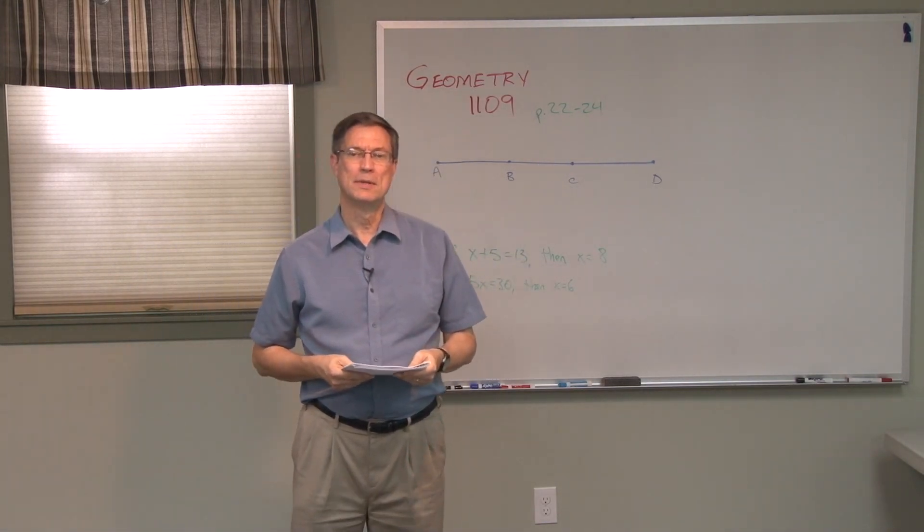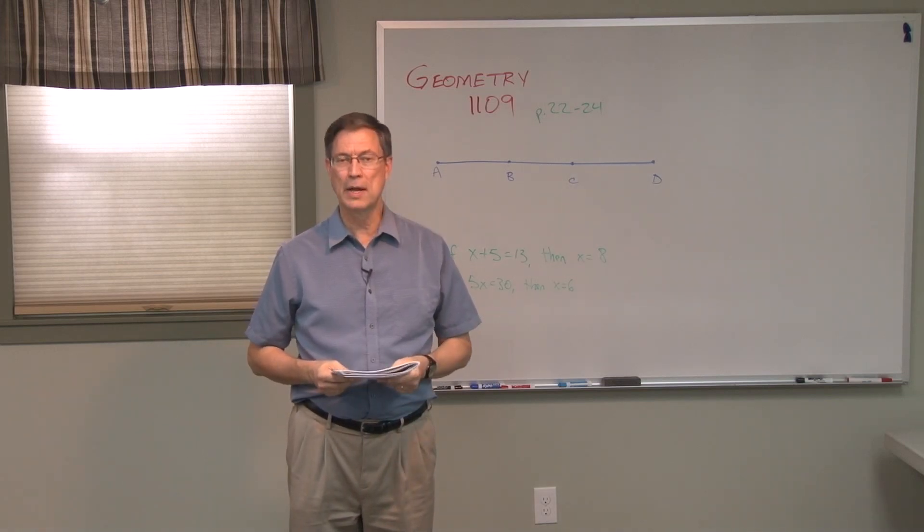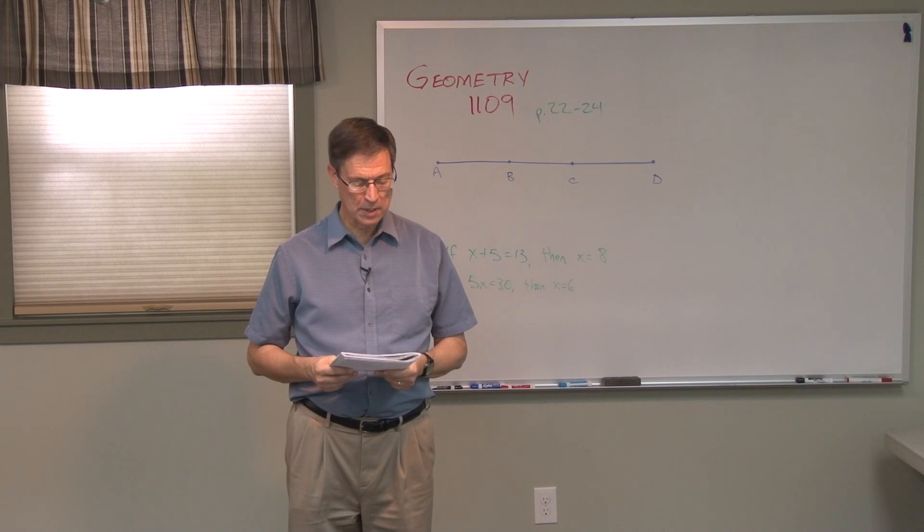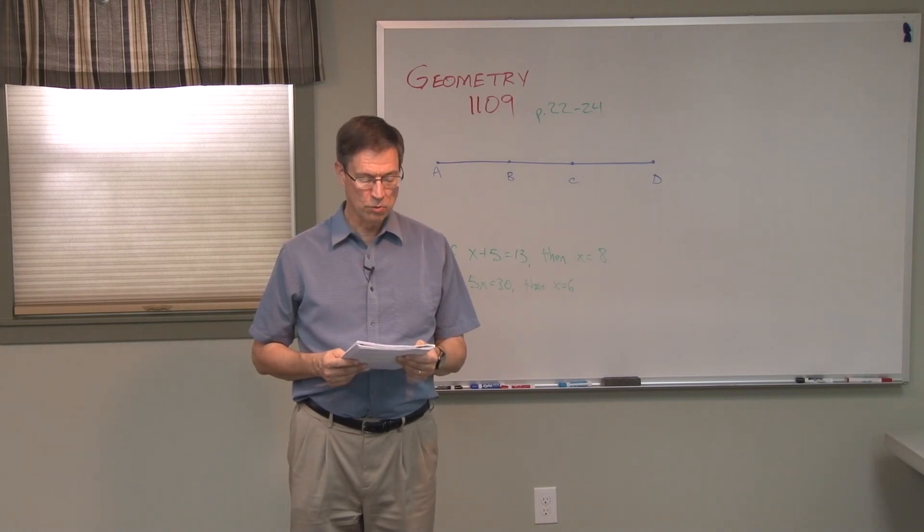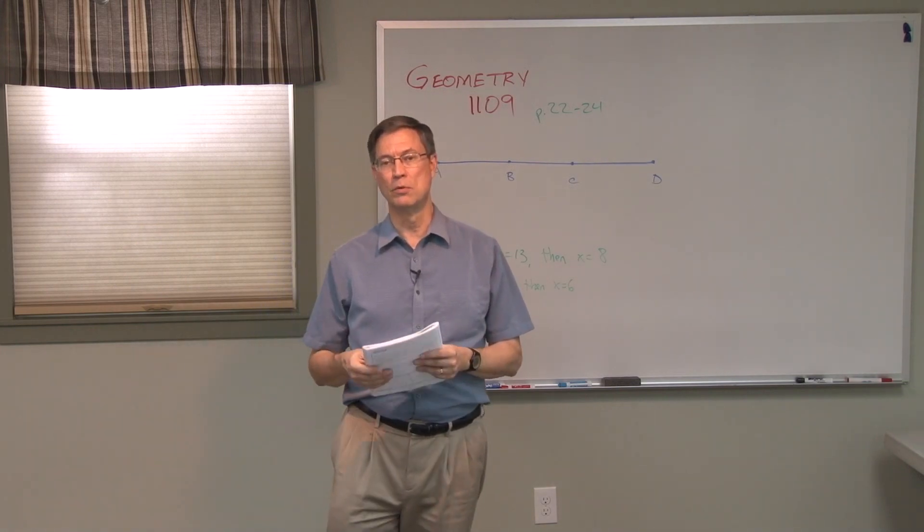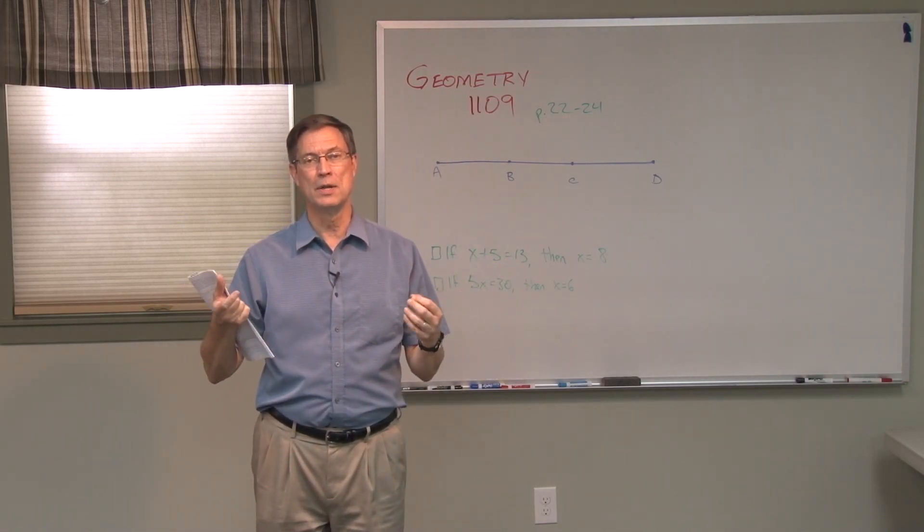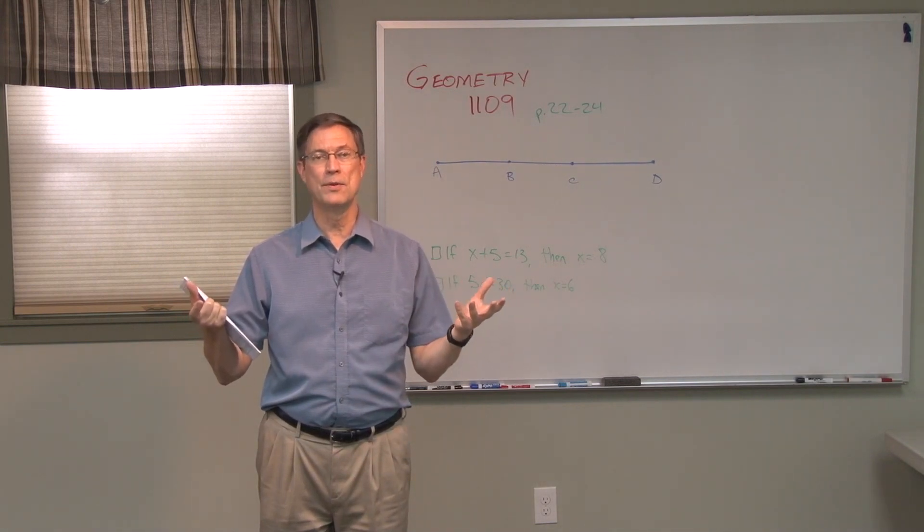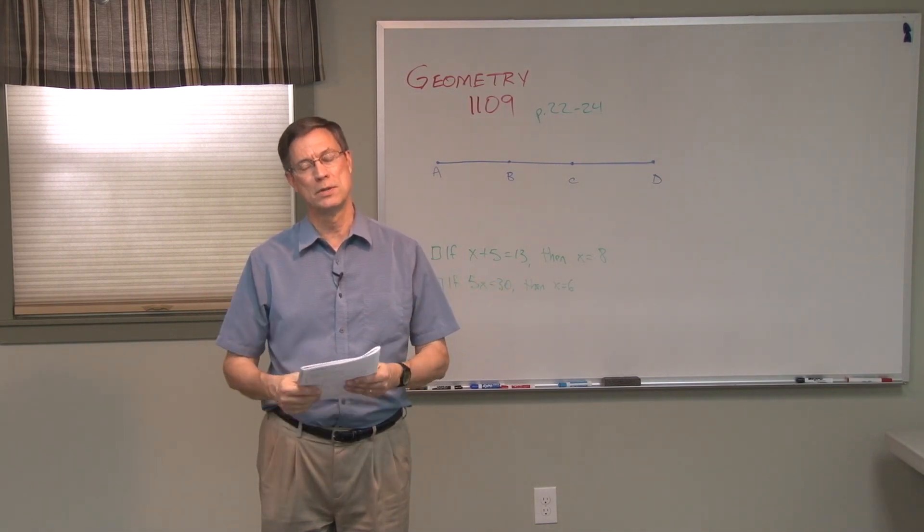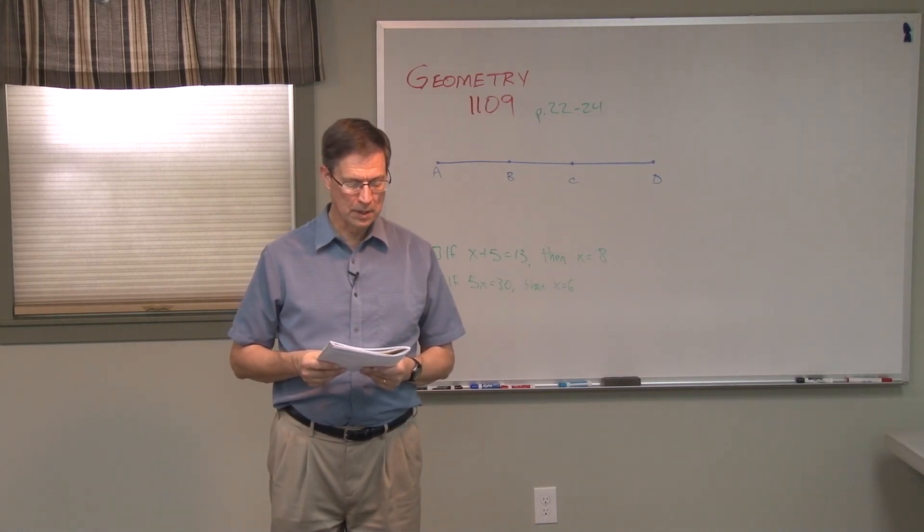If you think about some of the basic algebra that you've had, even some pre-algebra, if you had algebra last year, these should make sense thinking of numbers. So the addition property says if equal quantities are added to equal quantities, then the sums are equal. So if we said A equals B, then if I add C to both sides, A plus C would be equal to B plus C. So all they did was add the same thing to both sides of the equation.